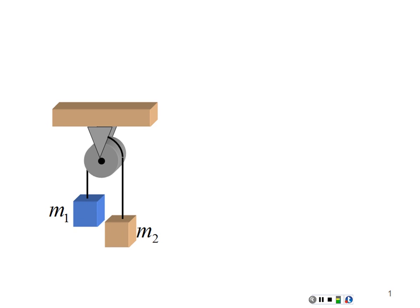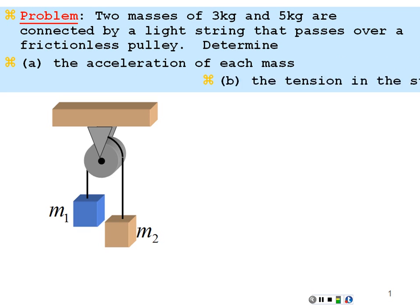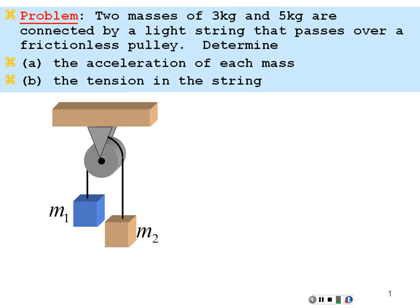Here's a short lecture in Chapter 5 to help supplement what we've introduced in the first lecture in Chapter 5. Consider this example problem of applying Newton's Second Law. Two masses, 3 kilograms and 5 kilograms, are connected by a light string passing over a frictionless pulley. Determine the acceleration of each mass and the tension in the string.